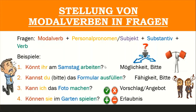So, this is how Können can show possibility or Möglichkeit, request or Bitte, ability or Fähigkeit, suggestion or Vorschlag, offer or Angebot, and permission or Erlaubnis.